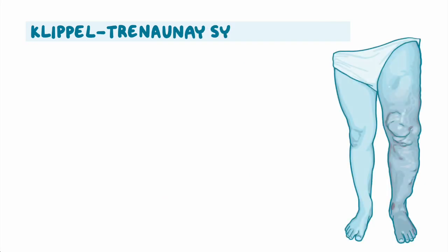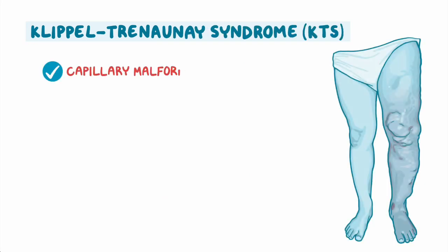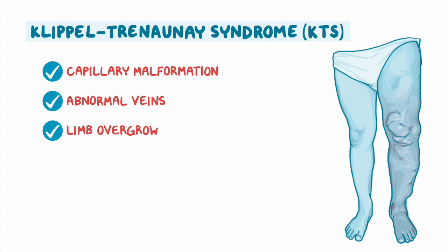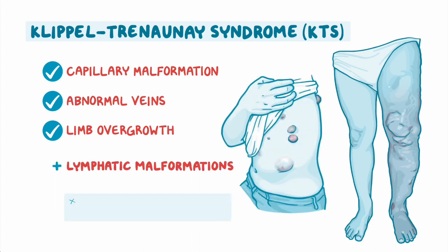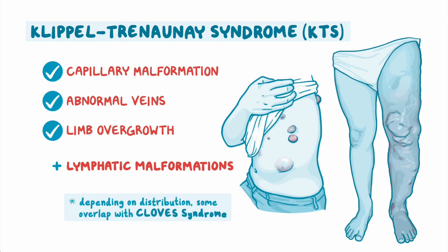Klippel-Trénaunay syndrome, or KTS, includes capillary malformation, abnormal veins, and limb overgrowth. People with KTS often have lymphatic malformations as well, so depending on the distribution, may have some overlap with CLOVE syndrome.